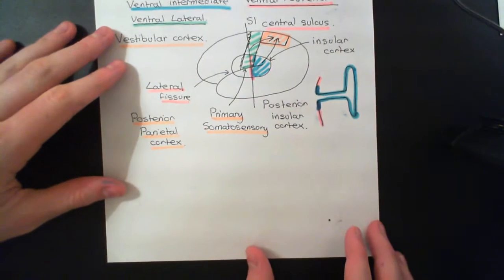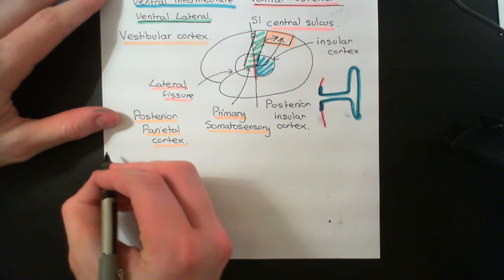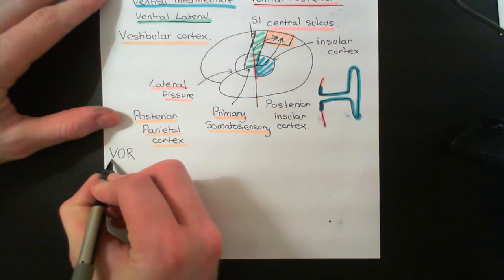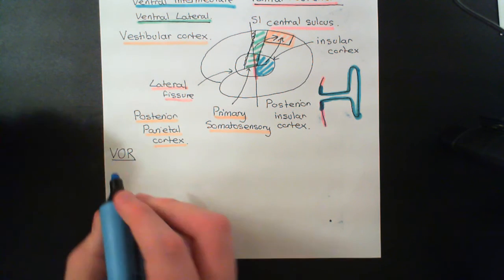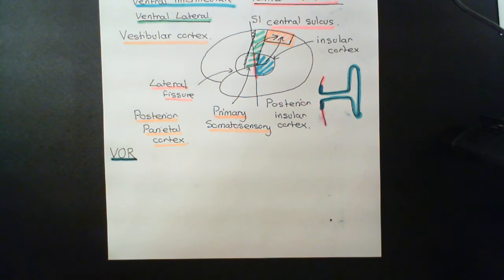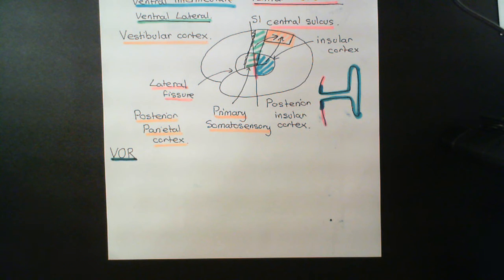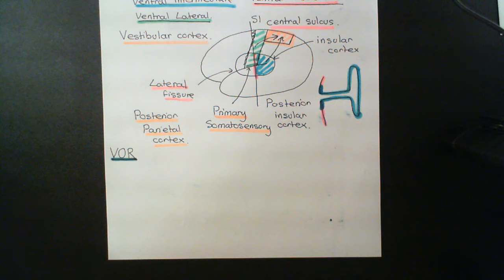Let's now go on to the vestibulo-ocular reflex. I'm not going to write out its full name because I introduced it at the start, so hopefully we can call it the VOR from now on. I want to tell you a little more about the VOR and then talk about how it actually operates. It's going to be the semicircular ducts that are really important in the VOR — specifically the rotational vestibulo-ocular reflex, which is the major one people study. I'll come back to that comment at the end.